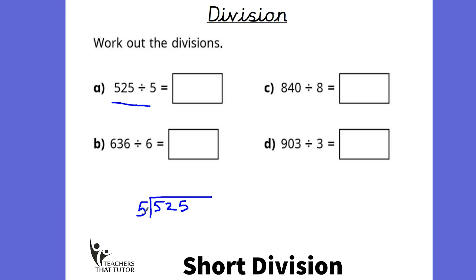we ask how many fives go into five — one. How many fives go into two? We can't do that, so we're going to ask how many fives go into 25. We put a zero there because fives don't go into two, and we join these two numbers up — the 2 and the 5 making 25. So how many fives in 25? 5, 10, 15, 20, 25 — there are five. And that would give us our final answer: 525 divided by five is 105.